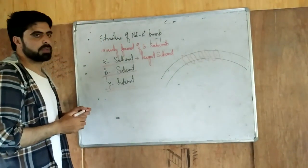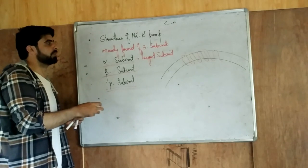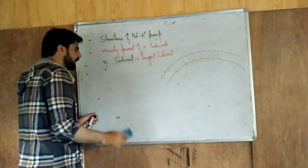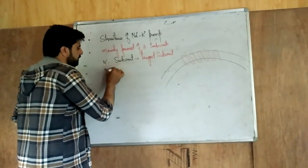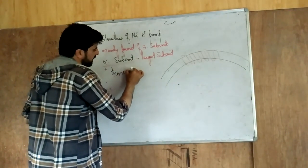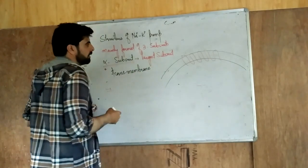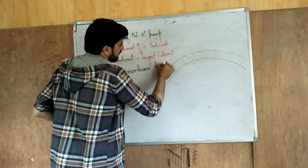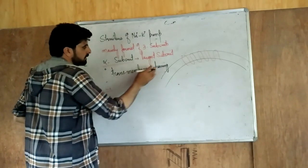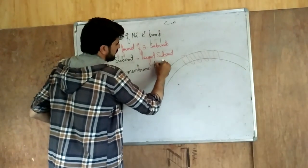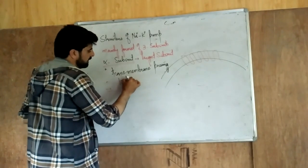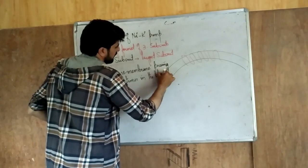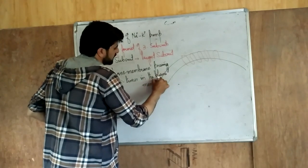The alpha subunit crosses the plasma membrane 10 times, making it a 10-pass transmembrane protein. Its amino group and carboxyl group are both intracellular — they face the cytoplasm. The protein structure within the membrane is alpha helical.